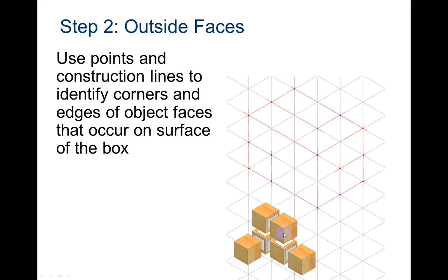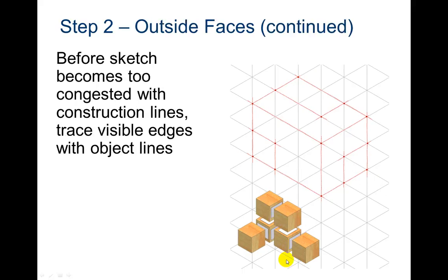This particular face and this one is not actually on the outside of the box. So they're just drawing the outside faces right now. And before sketch becomes too congested with construction lines, trace the visible edges with the object lines. So notice they're just drawing those object lines of the ones on the outside of the box.